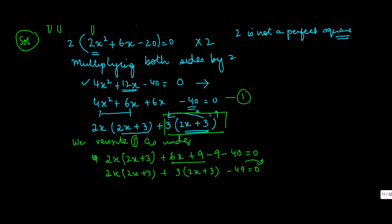Take this 49 to the other side. This side you can write as 2x + 3 and 2x + 3, or (2x + 3)² = 49.